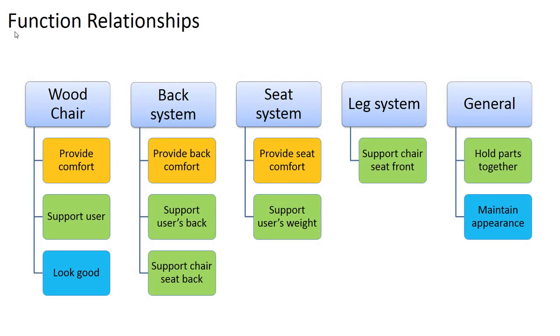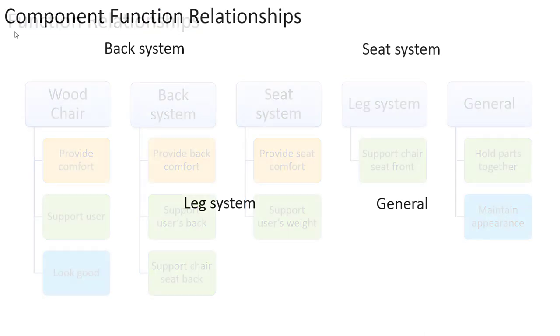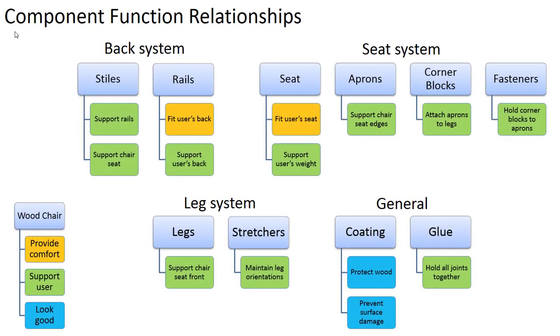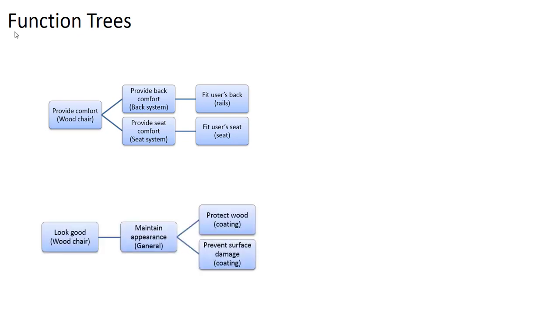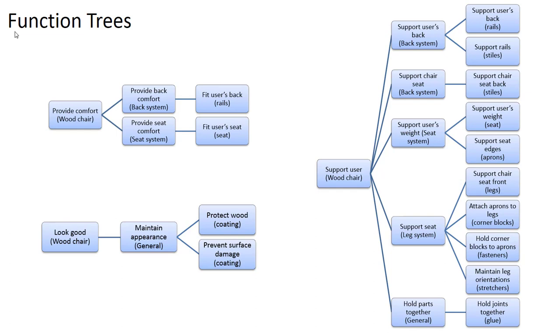In addition to identifying functions at every level, we want to see how those functions contribute to the overall function of the wood chair. Color coding helps with this — orange functions are associated with comfort, green with supporting the user, and blue with maintaining appearance. That same color coding can be applied at the component level. Alternatively, for each high-level function at the overall design level, you can build a tree that expands down from the system to the component level, showing how many things must work correctly to deliver that top-level function.